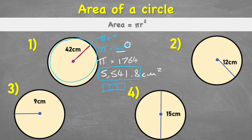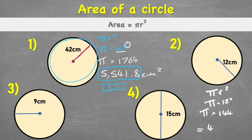Question two has a radius of 12 centimeters. Starting with πr²: pi times 12 squared. I can do 12 squared, which is 144, then multiply by pi, giving an answer of 452.4 centimeters squared.